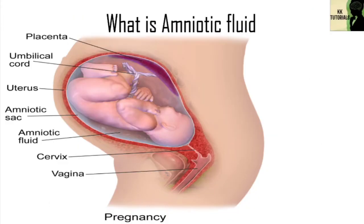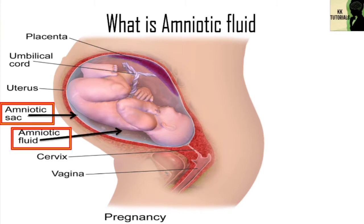In this image, you can see the amniotic sac. It is the cavity in which the embryo and later the fetus develops. This cavity is filled with amniotic fluid. The amniotic fluid constantly moves — it circulates as the baby swallows and inhales the fluid and then releases it.